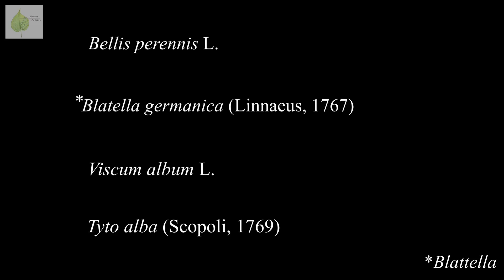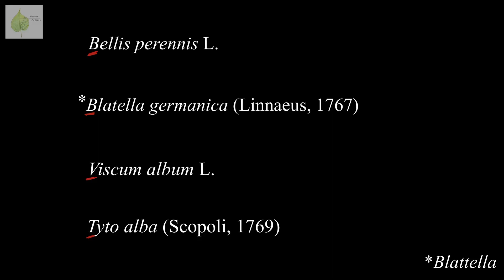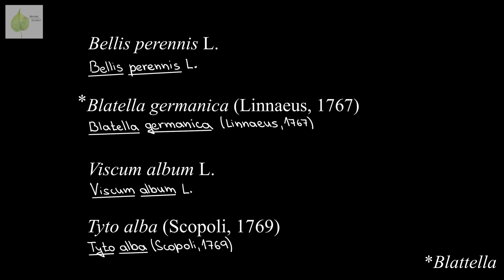To review: the scientific name consists of two parts — the genus name and the species name. Before we move on to what follows after the name, take a moment to look at some examples and notice the style the name is written in. Scientific names are always written in italics, and the genus name is always capitalized, while the species name always starts with a lowercase letter. If you happen to handwrite the name, then you underline the words that should be in italics.